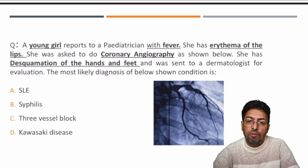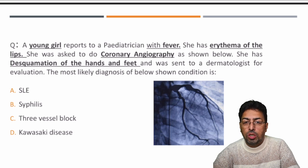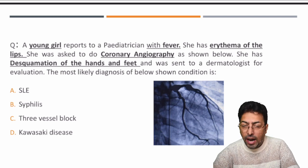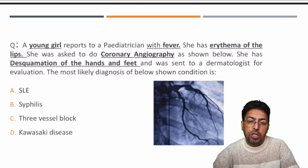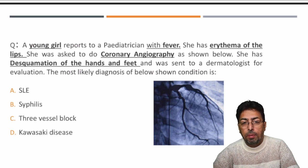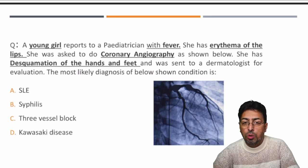Considering these options — SLE is a connective tissue disorder presenting with many features, but there is no single conspicuous feature matching here. Syphilis is caused by Treponema pallidum and can present as congenital, primary, secondary, or tertiary syphilis with a different set of symptomatology, including cardiovascular syphilis or neurosyphilis.